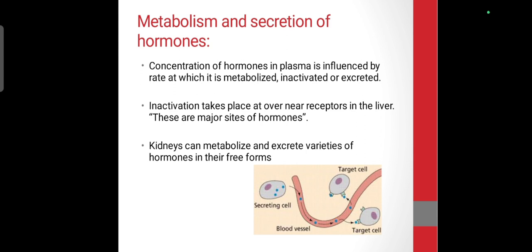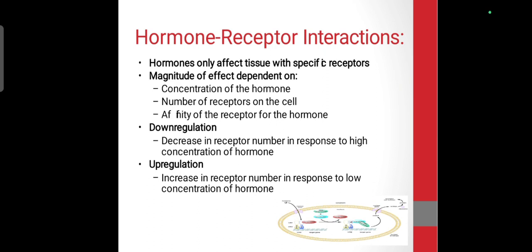Regarding metabolism and secretion of hormones, the concentration of hormones in plasma can be metabolized, inactivated, or excreted. For inactivation, the liver has receptors on the basis of which inactivation takes place. In the kidney, hormones are metabolized and also excreted.